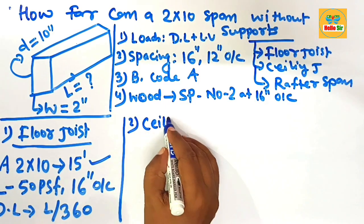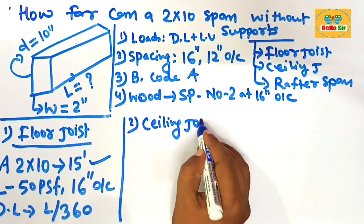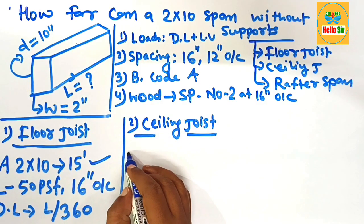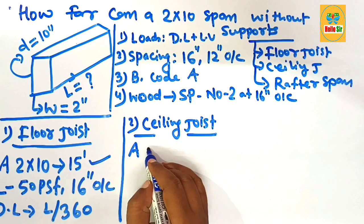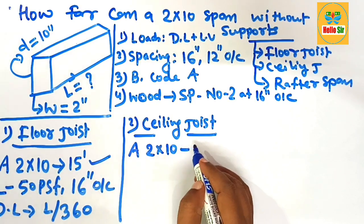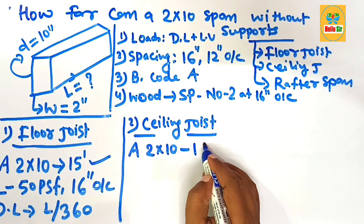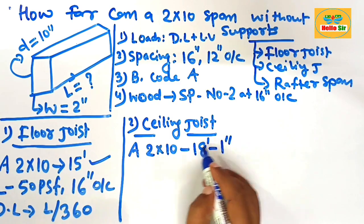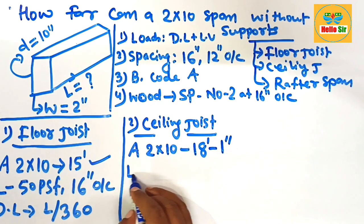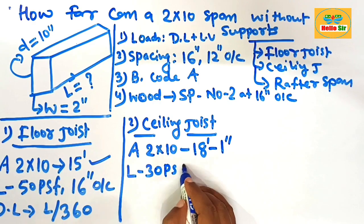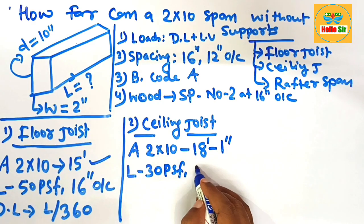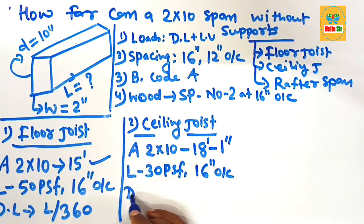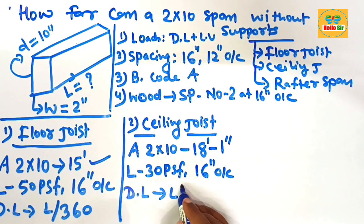Now the second, the ceiling joist span. What will be ceiling joist span for a 2 by 10 dimensional lumber? A 2 by 10 dimensional lumber as ceiling joist can span a maximum distance of 18 feet 1 inch. And what are the conditions? The load should be 30 pounds per square foot, and the spacing that is 16 inches o.c., and the deflection limit that is L by 240.